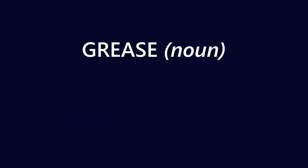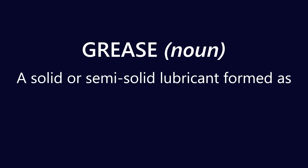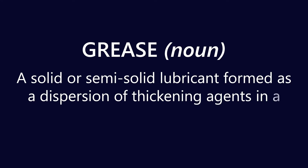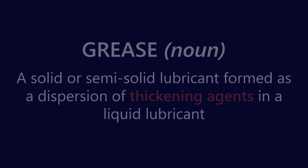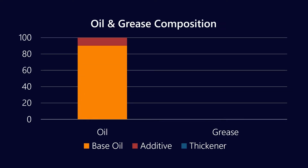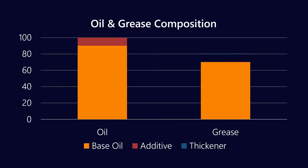Going back to our basic definition of grease from the last grease video, we said it's a solid or semi-solid lubricant formed as a dispersion of thickening agents in a liquid lubricant. The key there is thickening agents. They make up a considerable amount of grease — about 20 percent — but if you wanted a thicker NLGI grade, you would increase the amount of thickener in the grease and that would make it more solid.